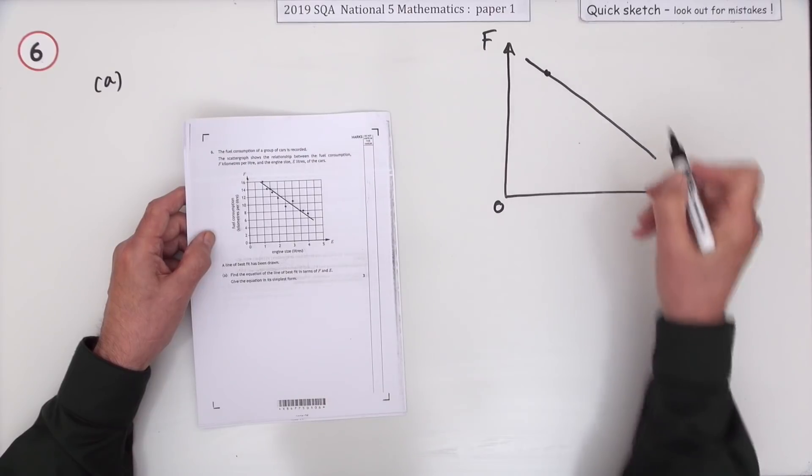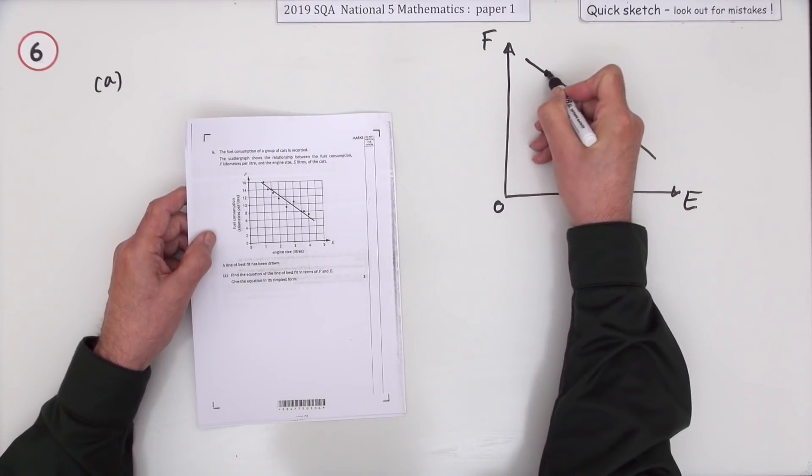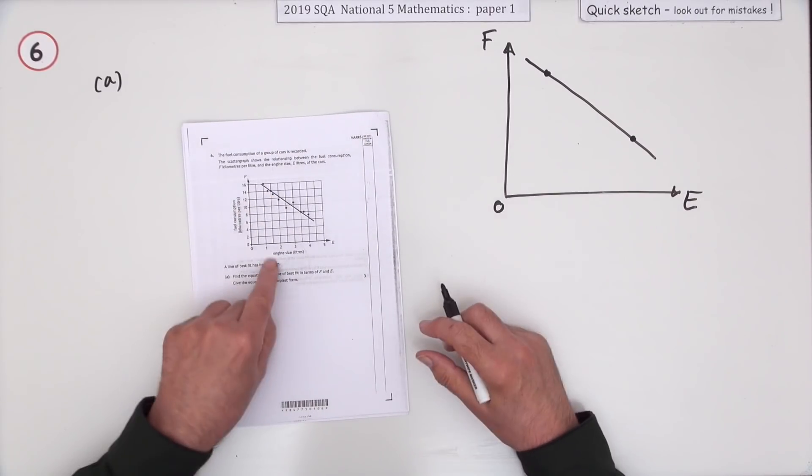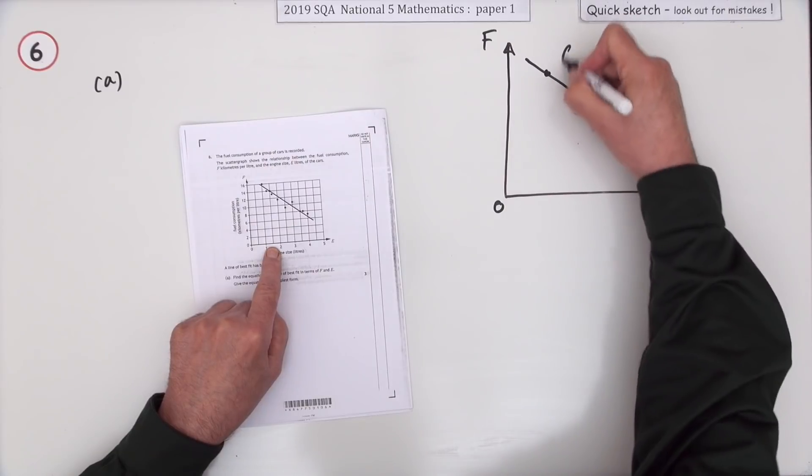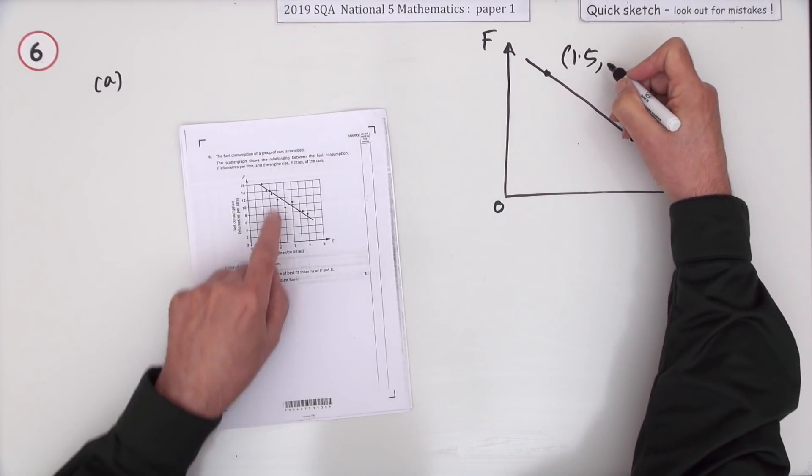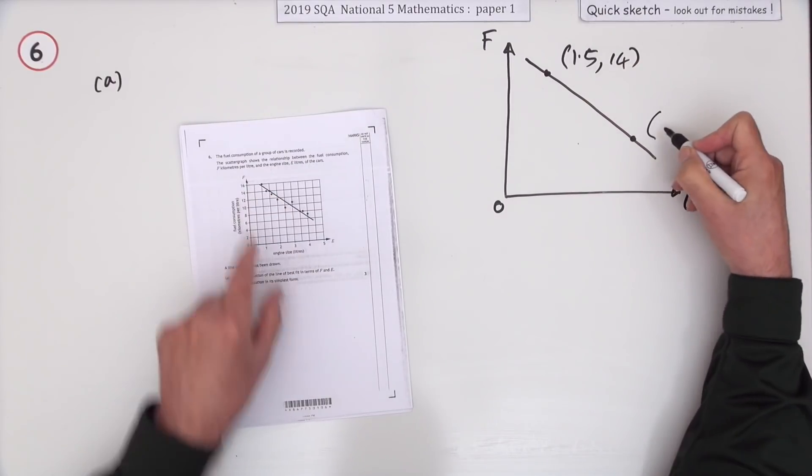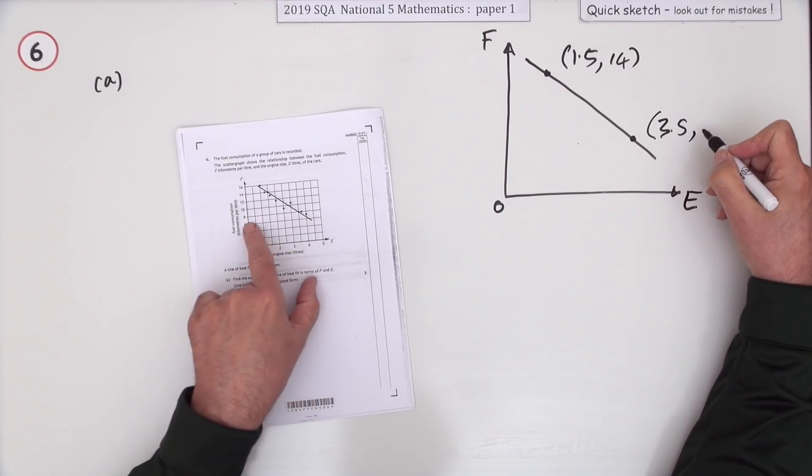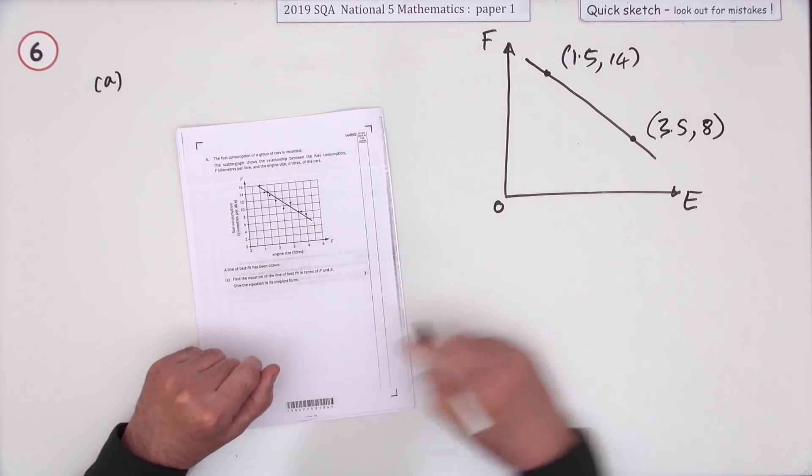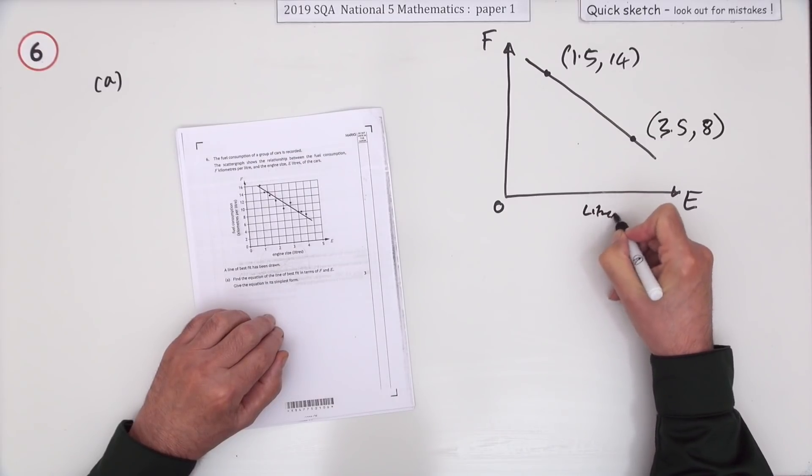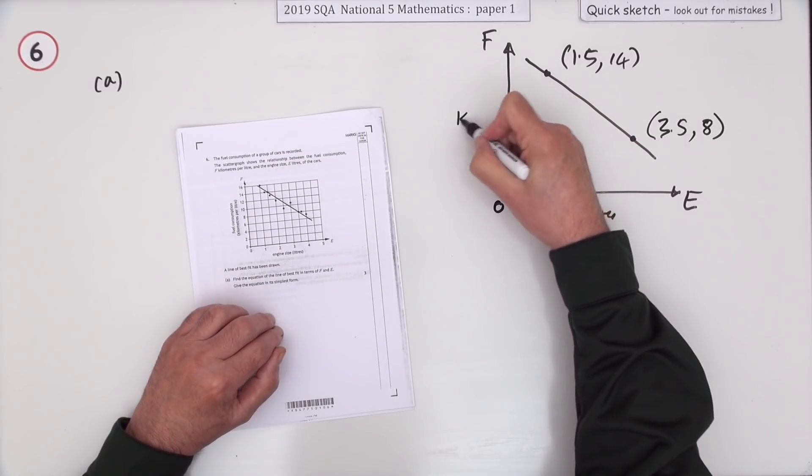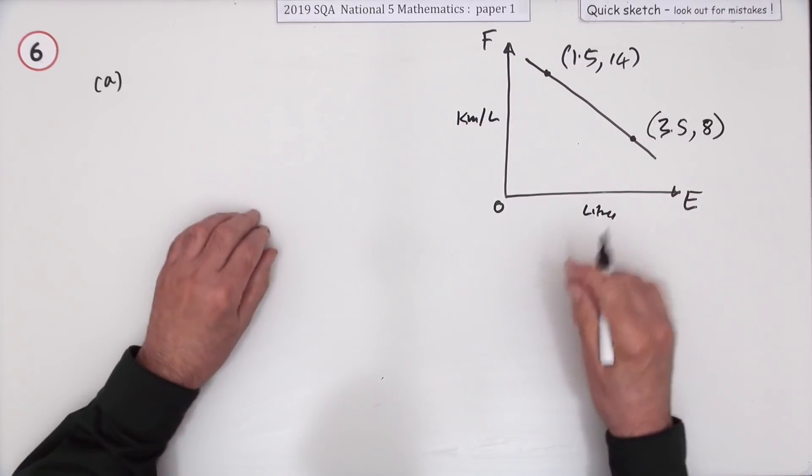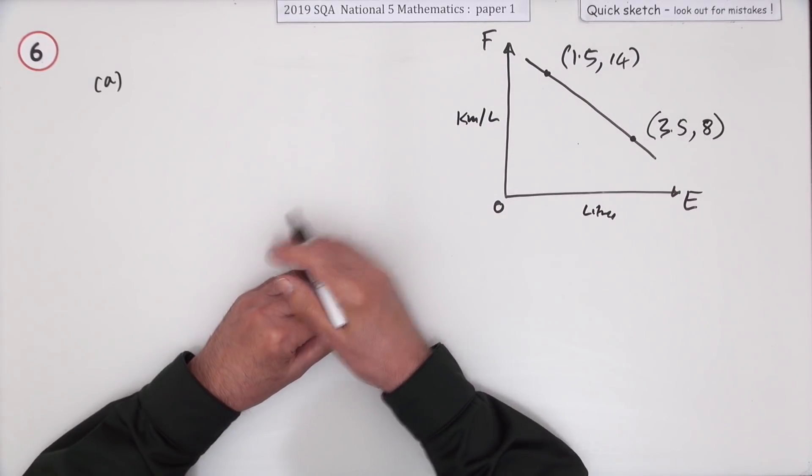Well, you search the diagram and you see there's two exact points on it. Those are the ones you're going to use. There's a point at the top here. I know I've not put the scales in. That's at one and a half along the bottom. So that's at 1.5. And it's at 14 up the way. This one, the other exact point, is at 3.5. And that one goes up to 8. So that's what I'm using. This is in liters. And this is the fuel consumption as in kilometers per liter.